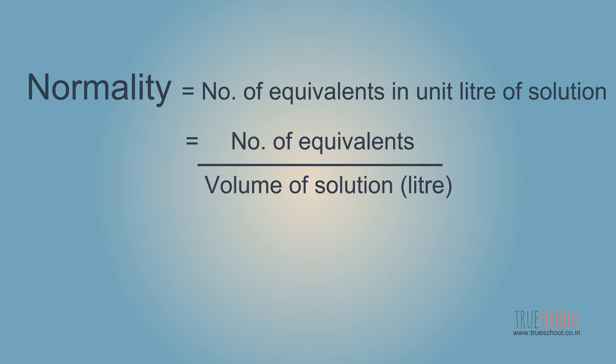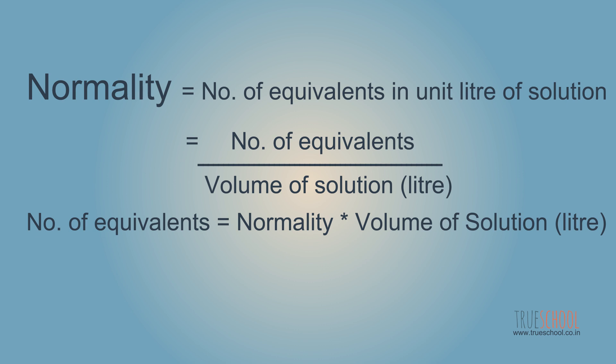If we know normality of a solution, we can also find number of equivalents in a given volume of solution by multiplying volume of the solution with its normality. Now we will try to understand why this is more helpful than molarity in certain cases.